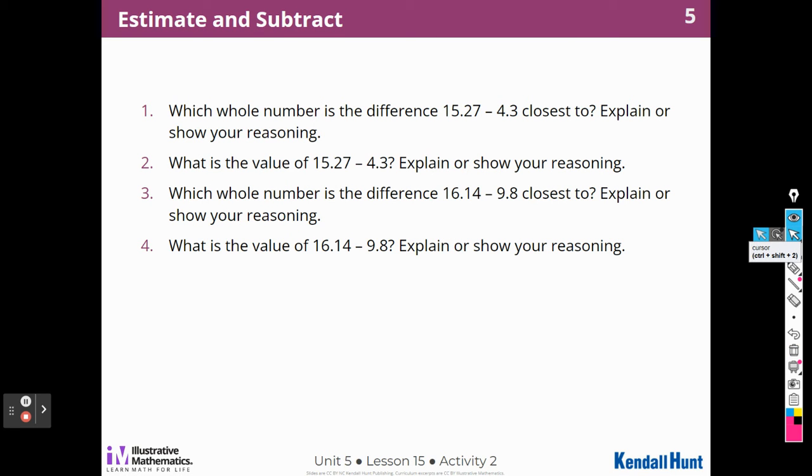Which whole number is the difference 15 and 27 hundredths and 4 and 3 tenths closest to? So they want us to round to the nearest whole number, right? So this would be closer to 15 than 16. And this would be closer to 4 than 5. So I'm going to say 15 minus 4 is 11. I'm going to say it's going to be closest to that. And that's my reasoning. I'm going to round this to 15 and this to 4 and subtract.